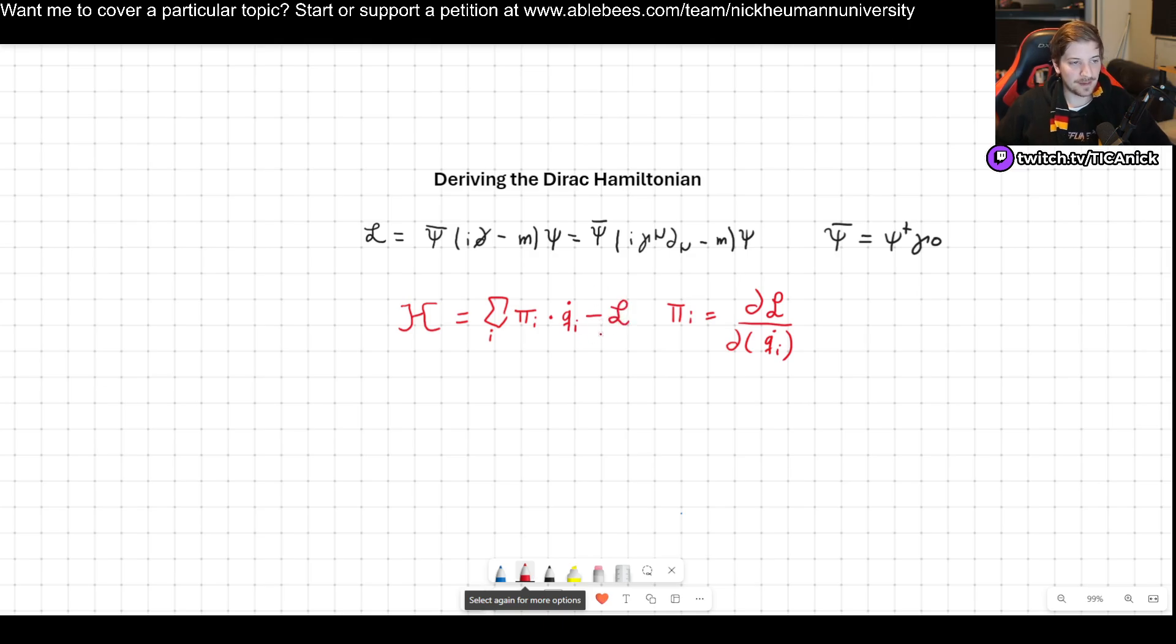And then we have to subtract by the Lagrangian. In this case, of course, we are working with the Lagrangian density. So we're going to get the Hamiltonian density in the end. To get the actual Hamiltonian, you have to integrate over all of space.